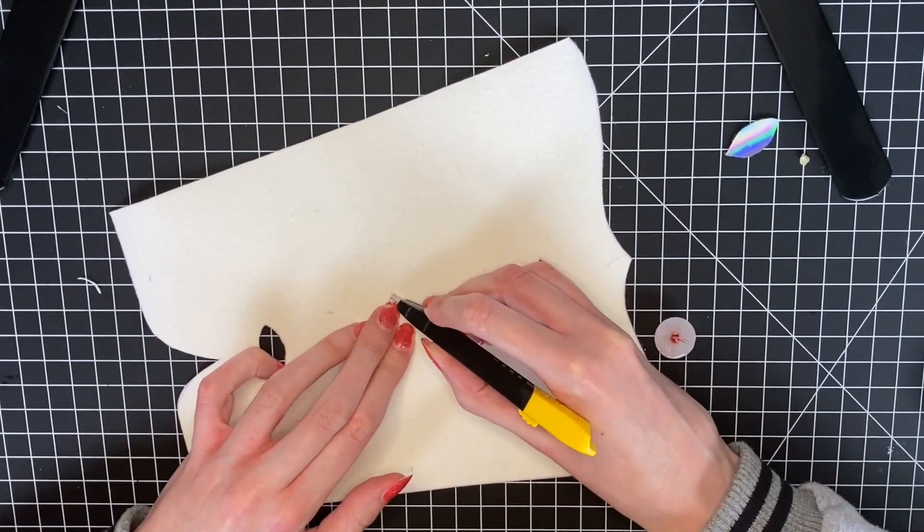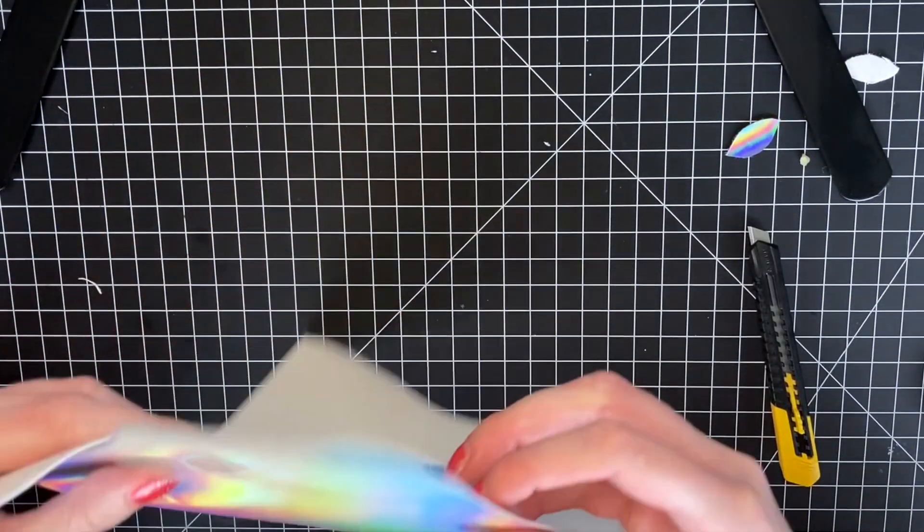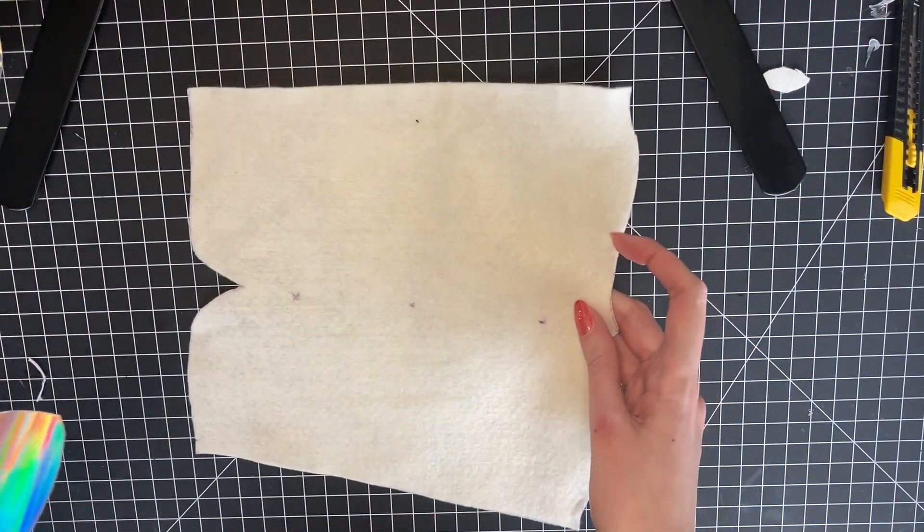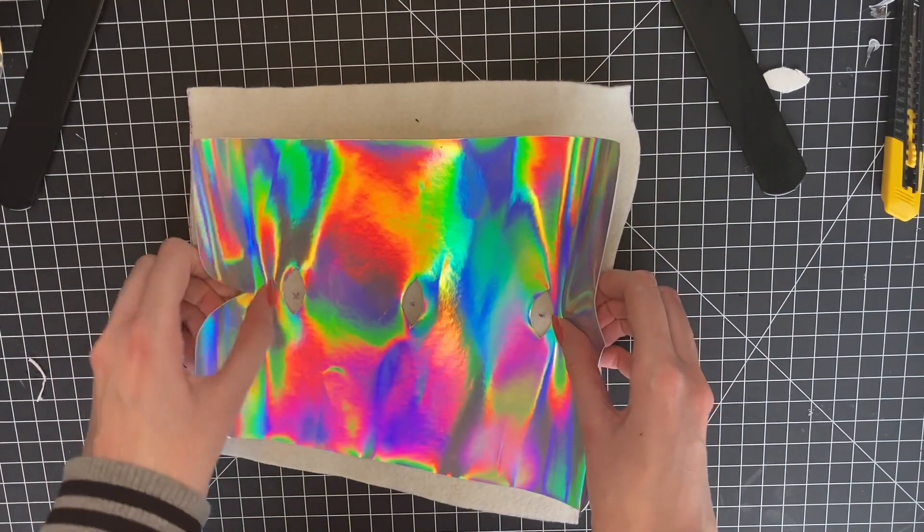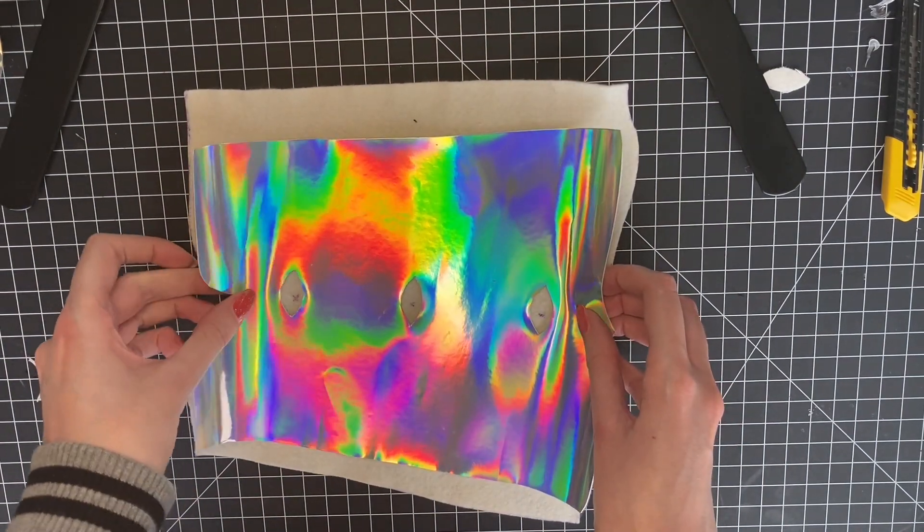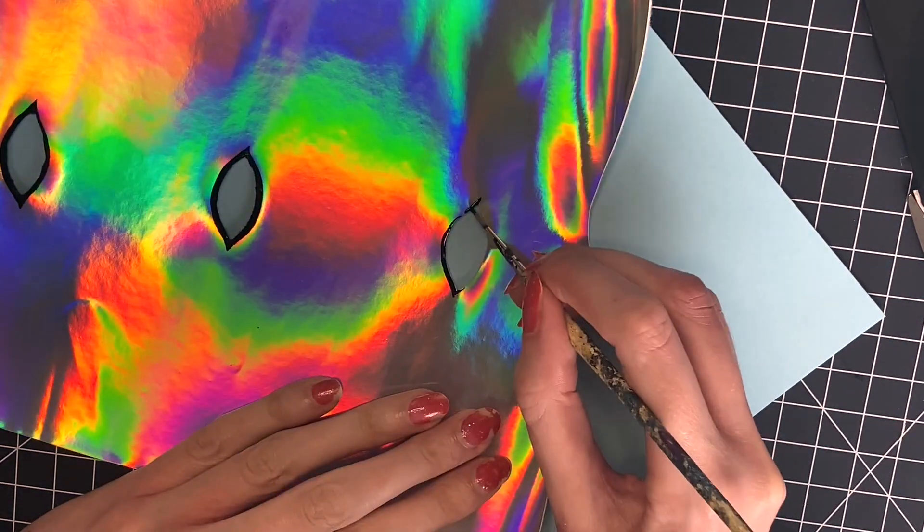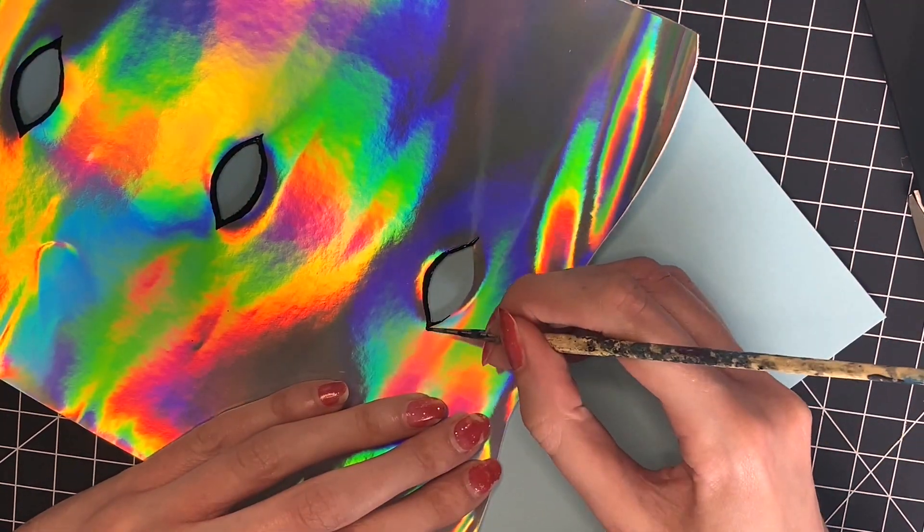Also here I am cutting out the eye shapes for the LEDs to shine through. Here you can see on the sides that I cut the cover slightly smaller than the main piece. This is because I am attaching hook and loop tape later to each side so it closes around my arm. Now I am just using some black paint to create some eyeliner around the eye shapes to make them pop.